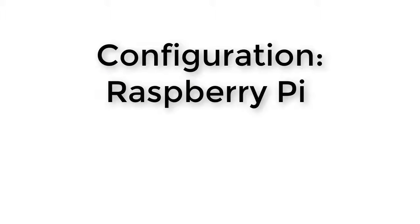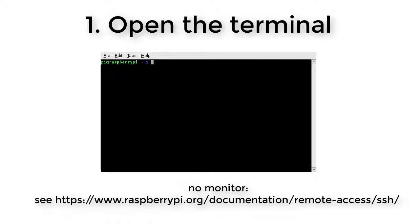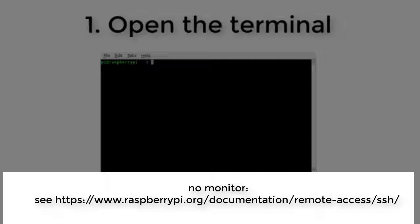Now we need to configure the Raspberry Pi. Open the terminal of your Raspberry Pi. If you do not have a monitor connected, you can access the command line of your Raspberry Pi remotely from another computer or device on the same network using SSH — Secure Shell.